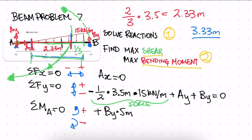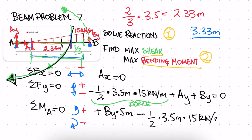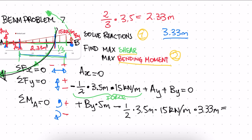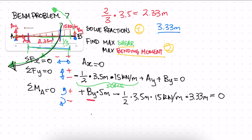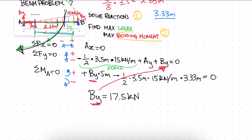The triangular force is acting in the clockwise direction, so it's negative. We write: negative one-half times 3.5 meters times 15 kilonewtons per meter, multiplied by 3.33 meters, all equal to zero. Solving for By, By equals 17.5 kilonewtons. Substituting back in, Ay equals 8.75 kilonewtons.